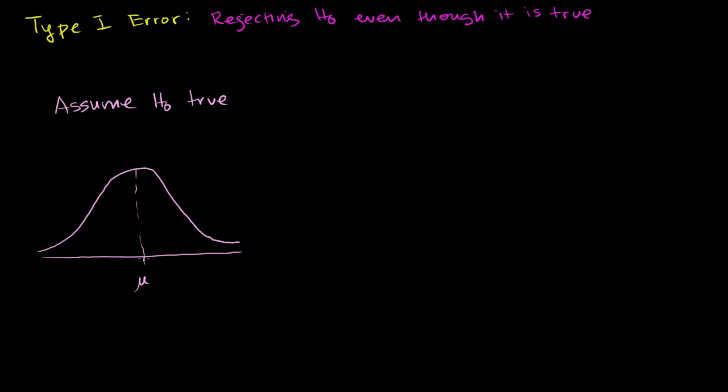It normally has some mean value right over there. And then we have some statistic, and we are seeing if the null hypothesis is true, what is the probability of getting that statistic, or getting a result that extreme or more extreme than that statistic?